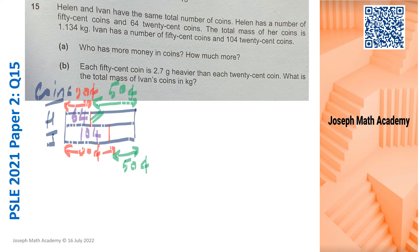From this part that I am going to shade in green, I am going to bring it down from this part here. So this is 104 minus 64, that gives us 40. That means Helen has 40 more 50 cent coins than Ivan.